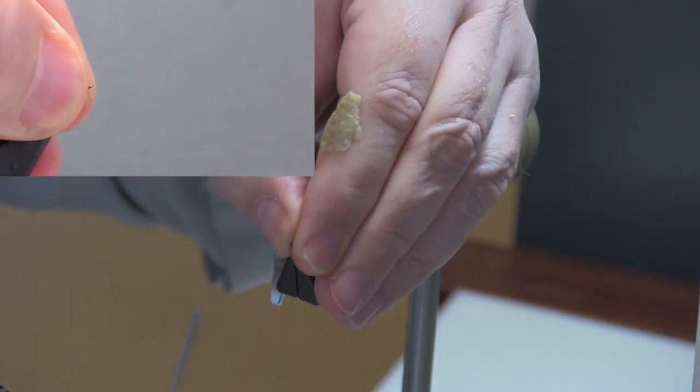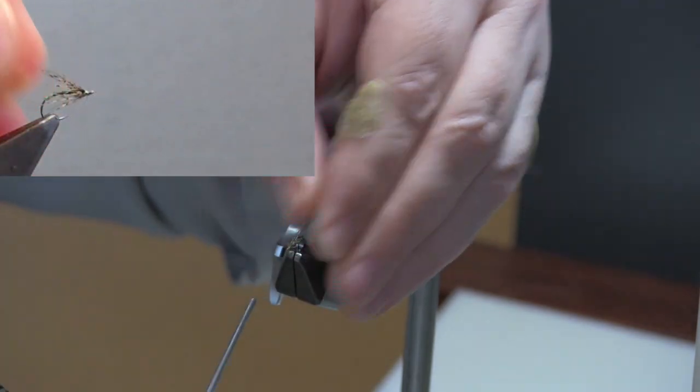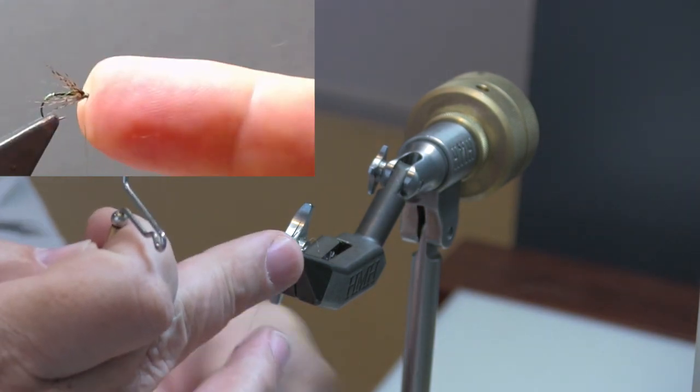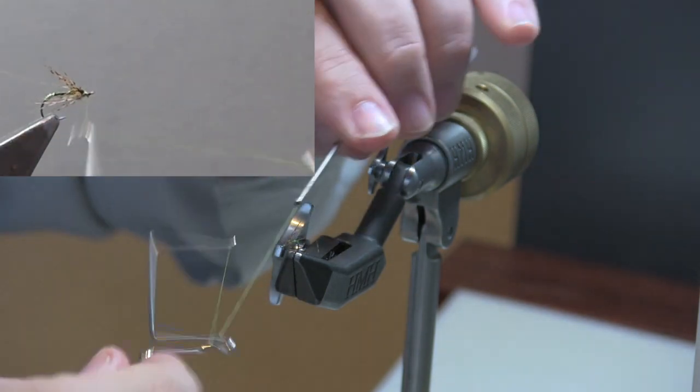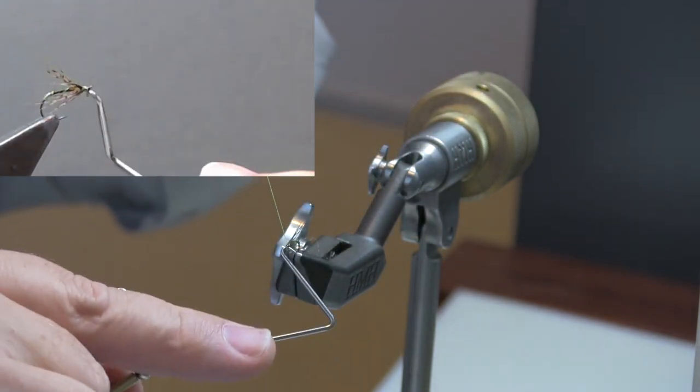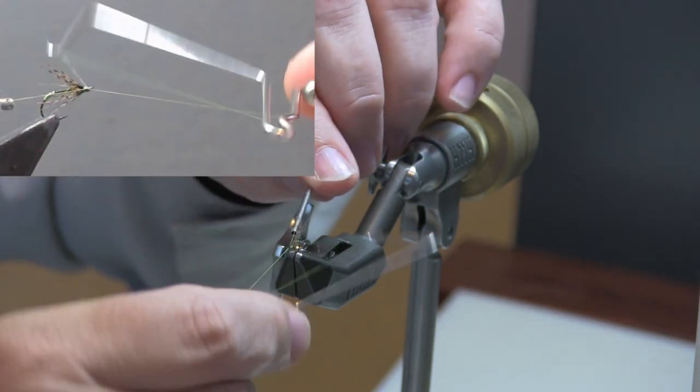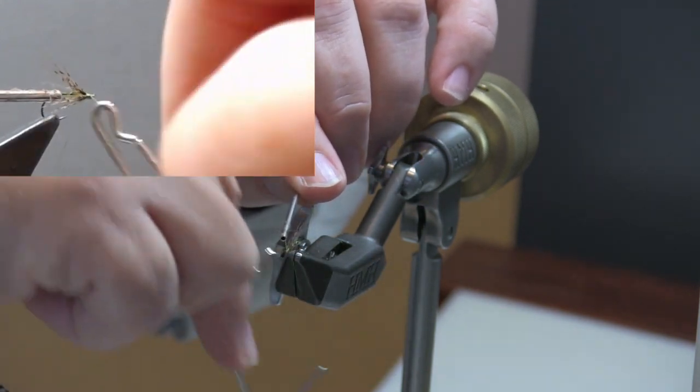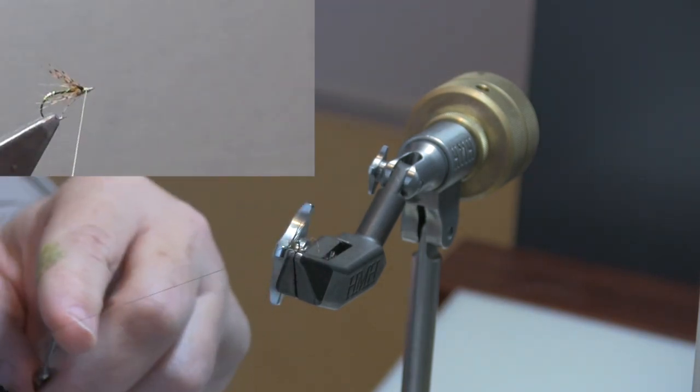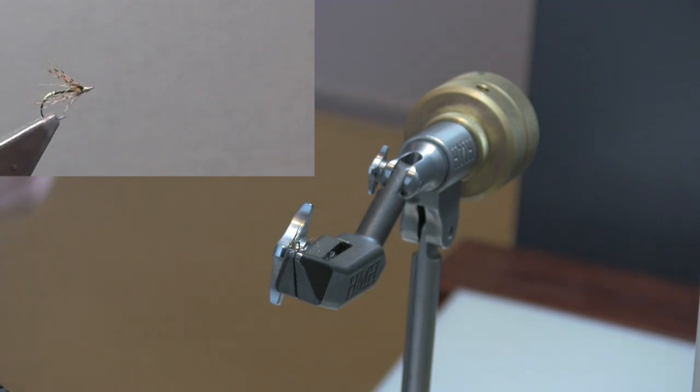Then again, just stroke any fibers back just to make sure nothing is crowding the hook eye. Wind back just a little bit. Now you build a nice little head of thread. A double whip finish on there you shouldn't need to use any sort of cement on the head. Trim that away. And the fly is done.